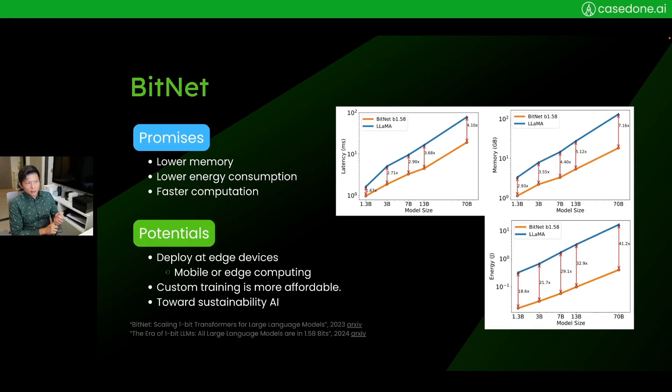In the past week I've heard something called BitNet, and when I look at it, it has interesting promises. With this new large language model, it will need lower memory, consume lower energy, and as a result, compute faster.